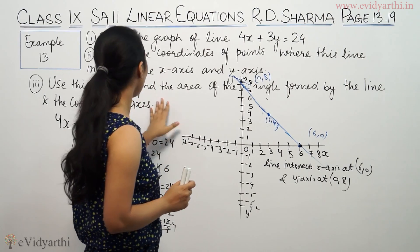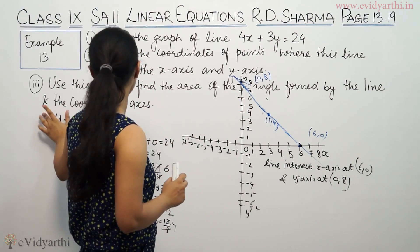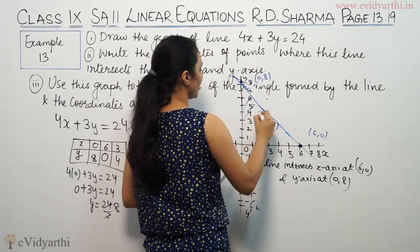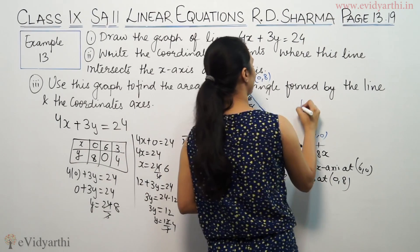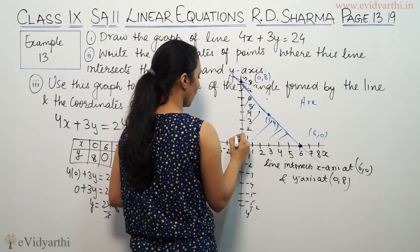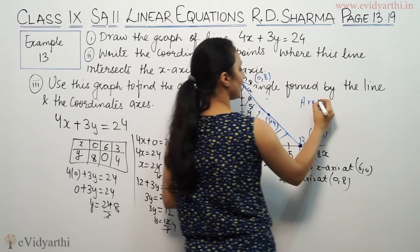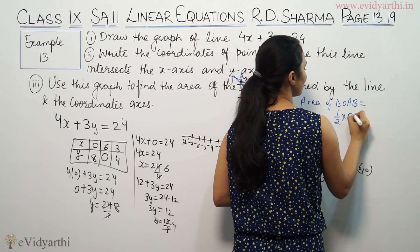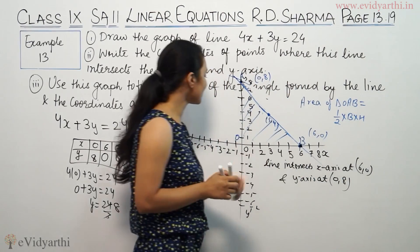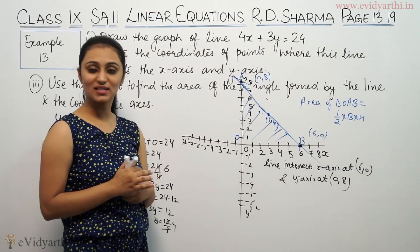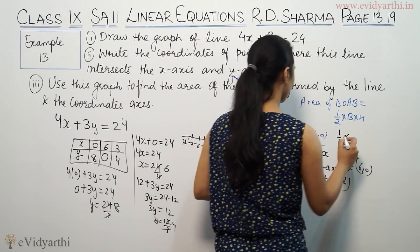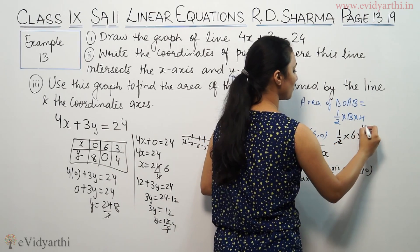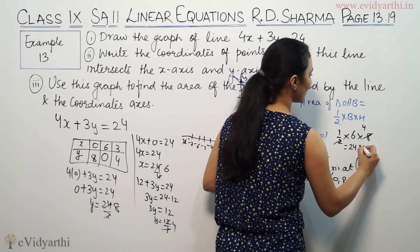Use this graph to find the area of the triangle formed by the line and the coordinate axes. Suppose this is O, this is A, this is B. Area of triangle OAB uses the formula half times base times height. We can use this because this is 90 degrees. Base is 6 and height is 8, so half times 6 times 8 equals 24 square units.